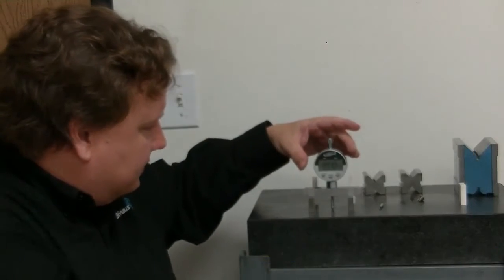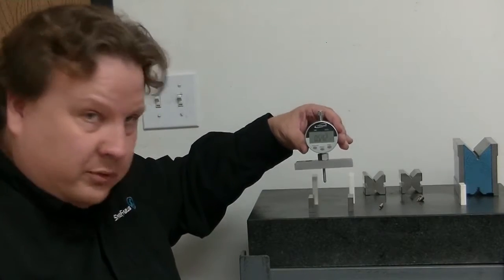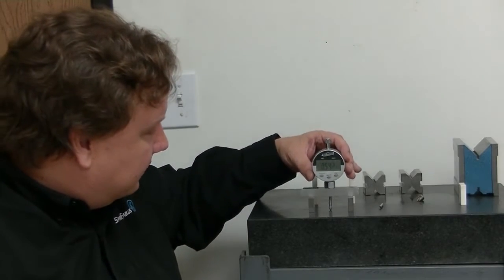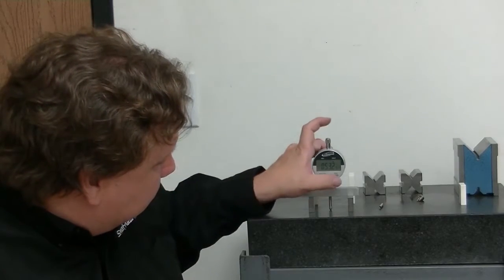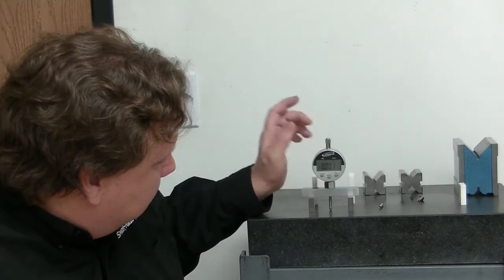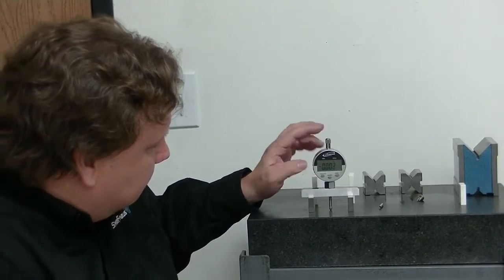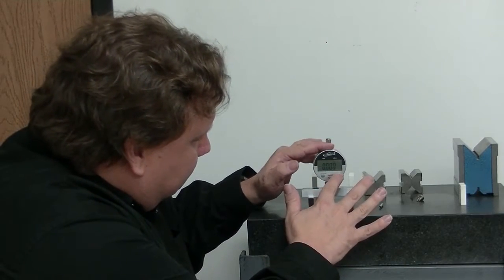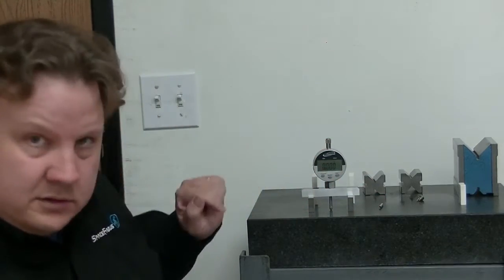So I have these two one-inch calibration blocks and I'm going to set it on there to calibrate it and I'm going to zero it out by pushing zero. Okay, so now I've got to hold it still when I push zero. So now I've got it zeroed out.